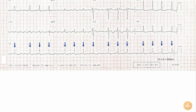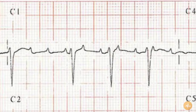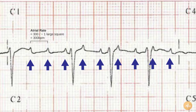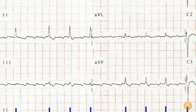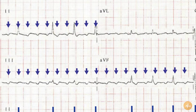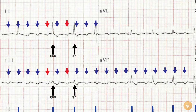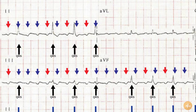The rhythm is atrial flutter with variable block. Organised atrial activity with a rate fractionally below 300 beats per minute is clearly seen in lead V1 with upwards complexes and with negative complexes in the inferior leads. This pattern is suggestive of anti-clockwise or atypical atrial flutter. There is variable block with sometimes alternate and sometimes every third flutter wave being conducted to the ventricles.